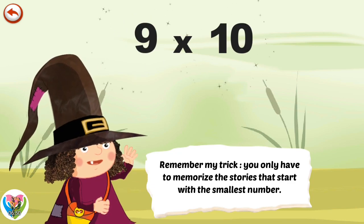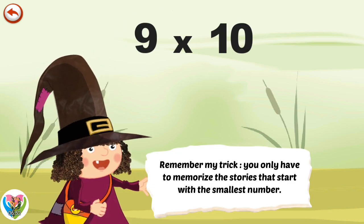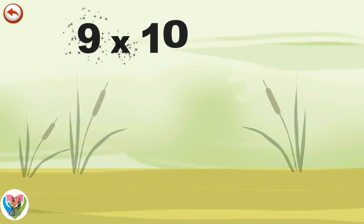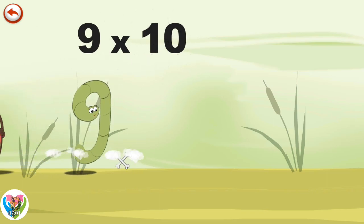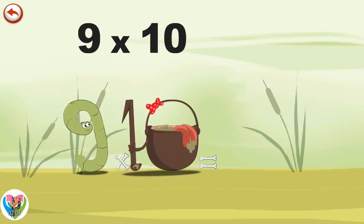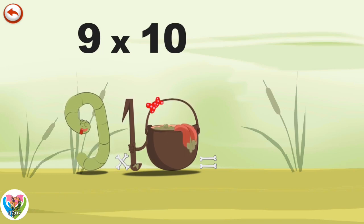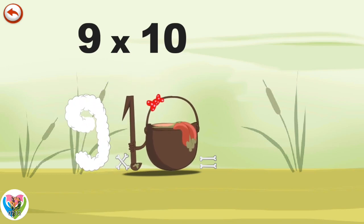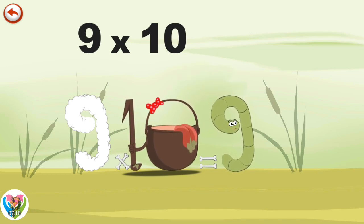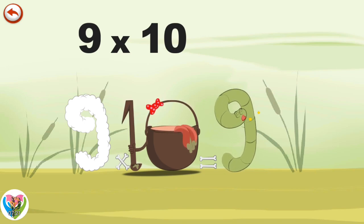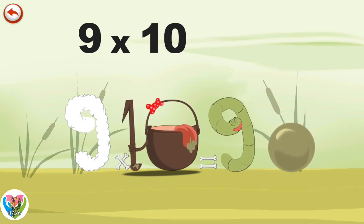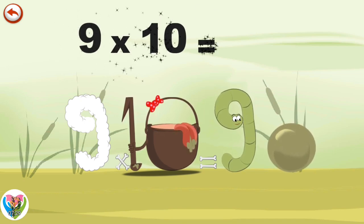Remember my trick. You only have to memorise the stories that start with the smallest number. What's the story of 9 times 10? He dives headfirst into the cauldron and comes out feeling very full. He gives an enormous magic burp and blows a bubble in the shape of a zero. Nine times ten is ninety.